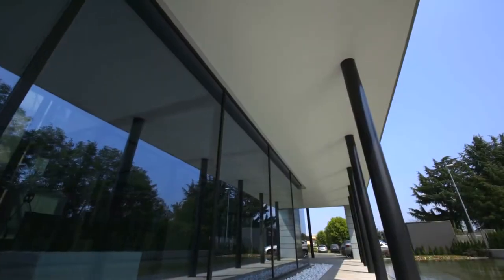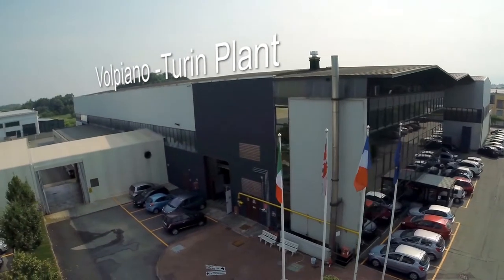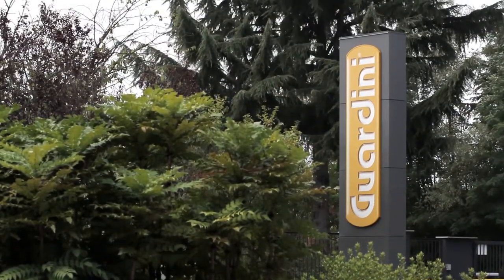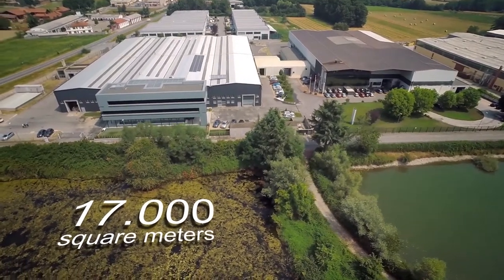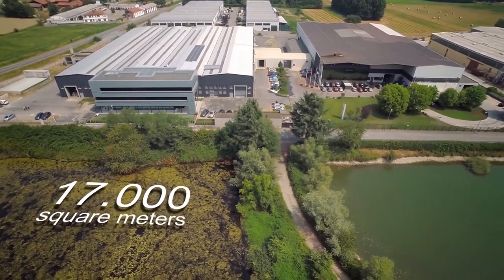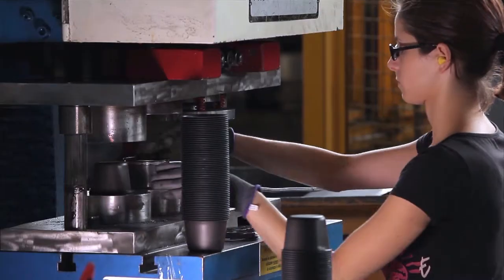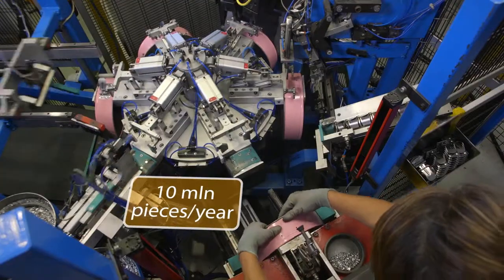Guardini's bakeware manufacturing is entirely made in its production plant located in Volpiano in the industrial suburb of Turin. The factory covers an area of 17,000 square meters and produces around 45,000 items every day for a total quantity of 10 million bakeware shapes per year.